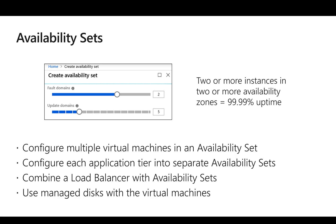In general, availability sets provide an SLA of 99.95 percent, and this is valid only when we assign at least two VMs in an availability set. If there is only one VM, it's not recommended to use an availability set — we can directly use it as a single-instance VM on an SSD, which gives a fixed SLA of 99.9 percent. If a single VM is assigned to an availability set, there is no SLA applicable.